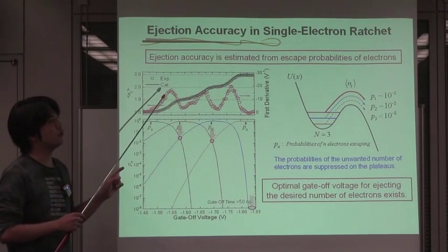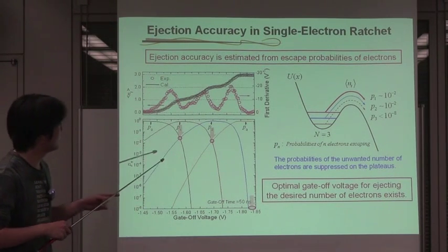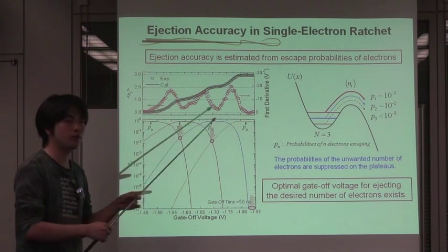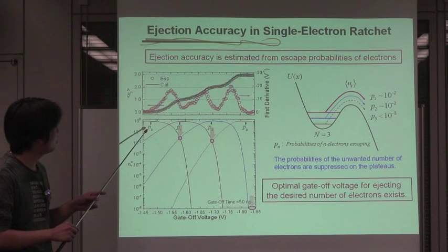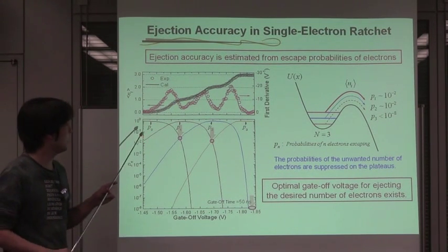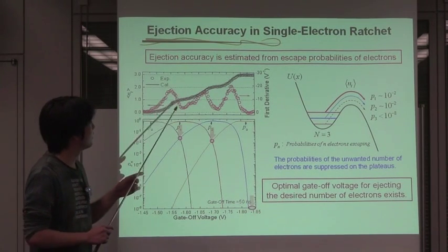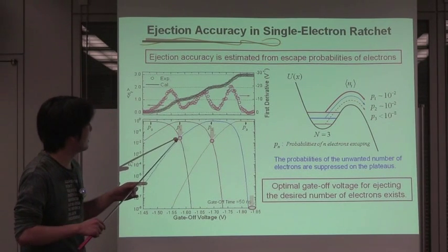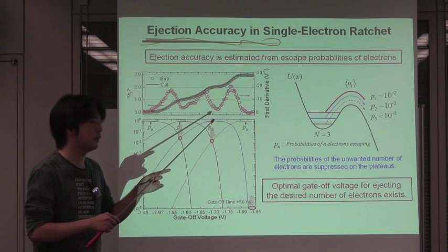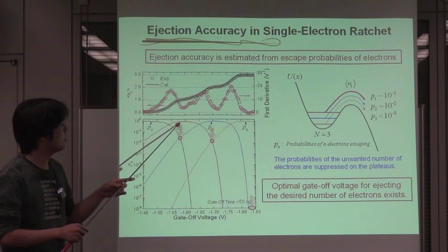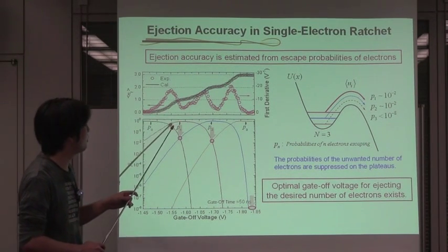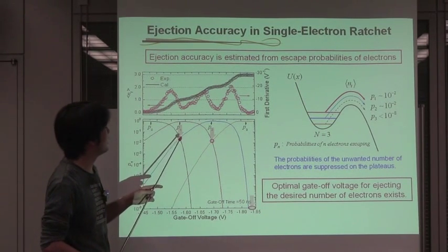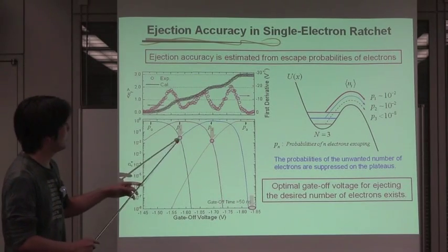Next, we estimate the ejection accuracy from the escape probability. The lower figure shows the escape probability of the first and the second and the third electrons. The black line indicated as p_0 shows the escape probability of no electron. Importantly, at the quantized plateau, the escape probability of the unwanted number of electrons, p_{n-1} and p_{n+1}, is suppressed, leading to maximized the n-th escape event probability. Therefore, the optimal gate-off voltage for ejecting the desired number of electrons exists here and here and here.